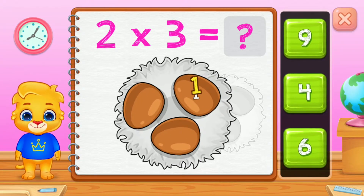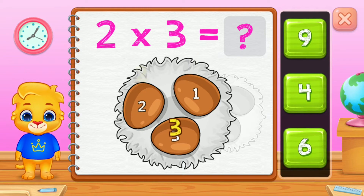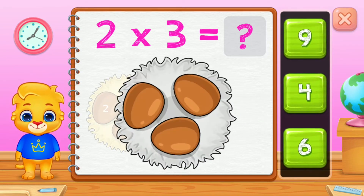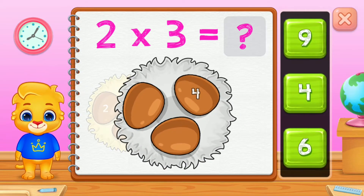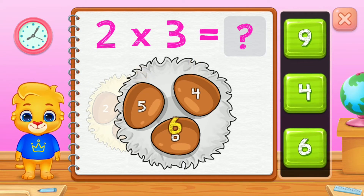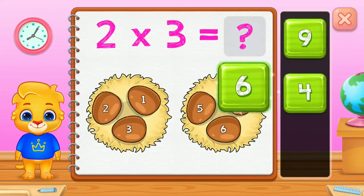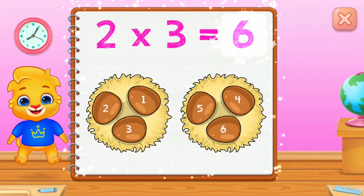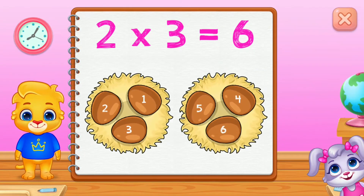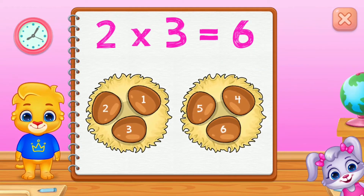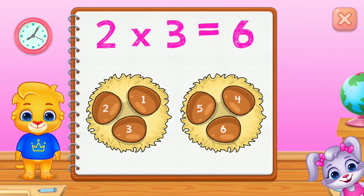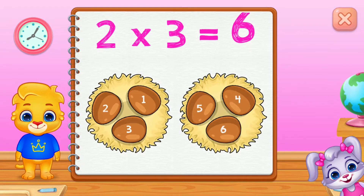1, 2, 3, 4, 5, 6. 2 groups of 3 equals 6.